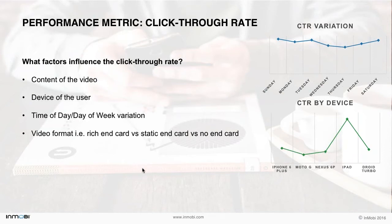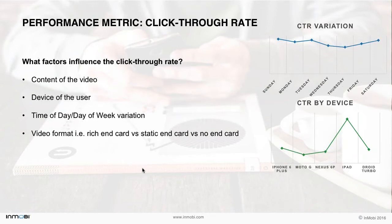Thirdly, there is the classic time of day or day of week variation. CTRs may vary depending on the day or time. Data analyzed for the US market shows Sunday has the highest CTR — most likely since people have more spare time and are more receptive on a holiday. The CTR drops when Monday blues kick in and continues its downward trend through Thursday, then starts to rise again on Friday back through Sunday. Understanding these variations is essential so you can factor them into your campaign budget allocation.